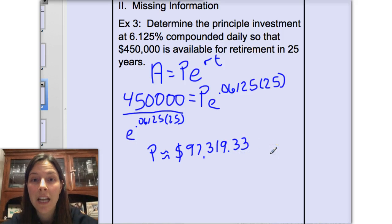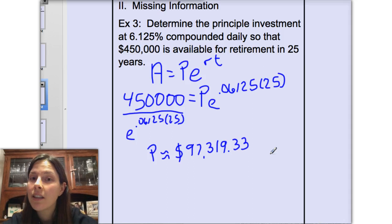That is a lot of money. Not a lot of people have $97,000 just laying around to invest in an account to make sure that they're ready for retirement. And this is 25 years away. So, a little financial lecture here. Make sure you think about that.